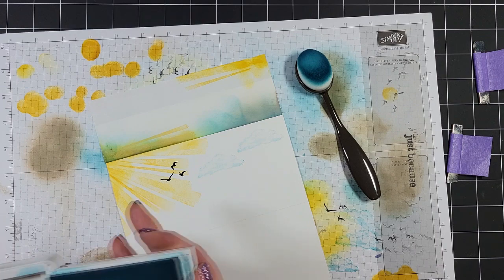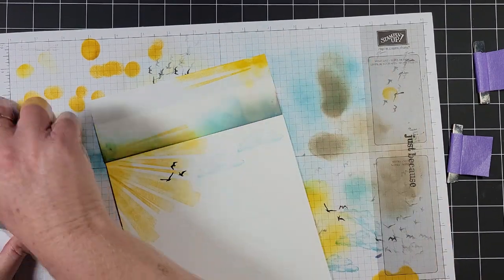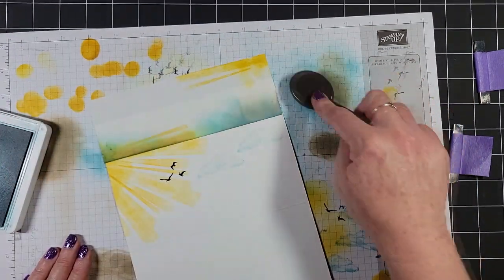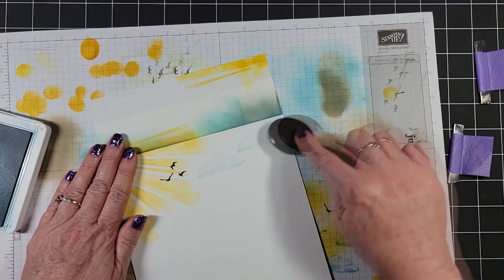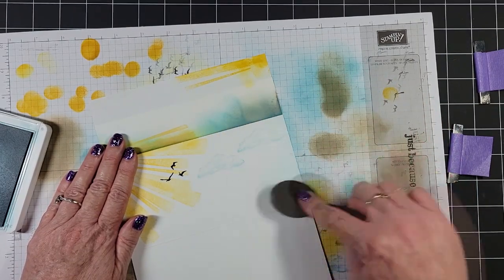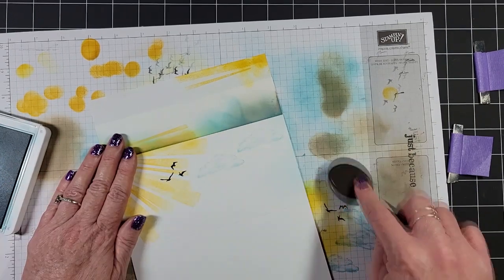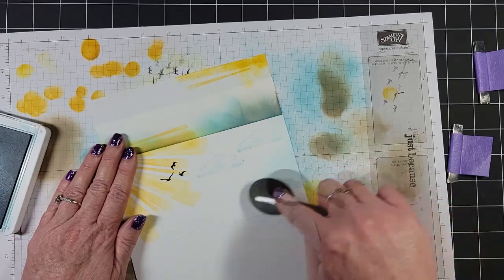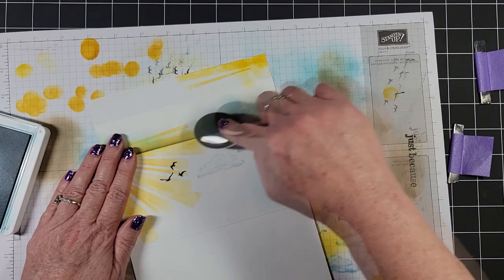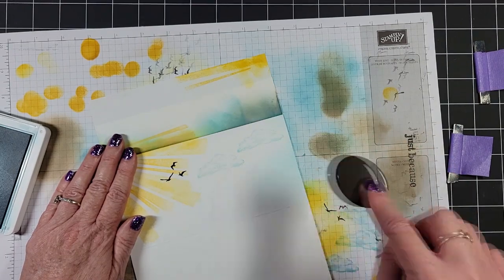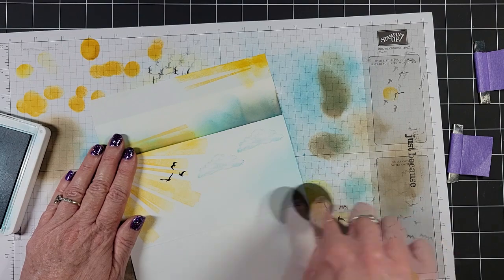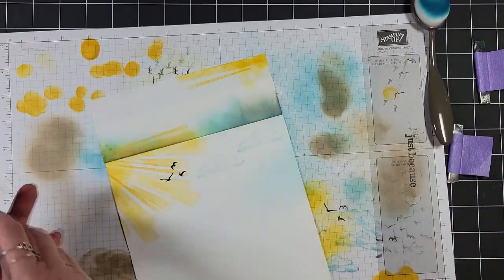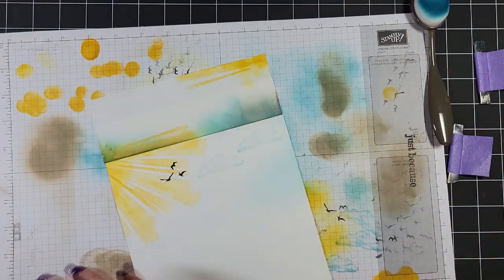Alright. So I've gone ahead and added the seagulls and everything. And so now I'm going to do a little blending. I just want to add some color and dimension to the card, but I don't want to add a lot of layers. So sponging or blending on color really helps create that dimension and interest without adding bulk to the card.